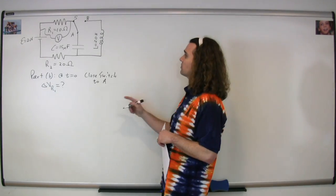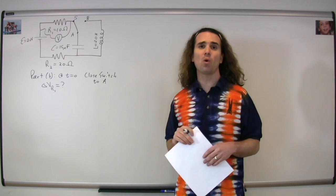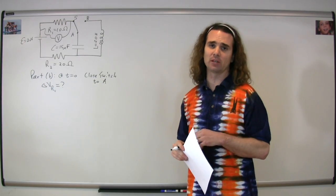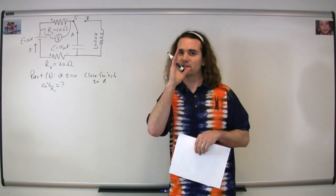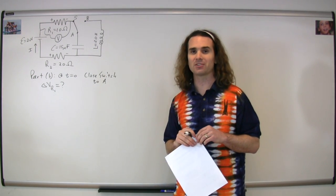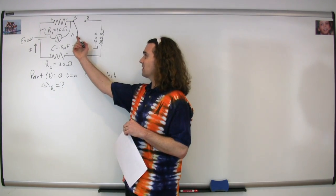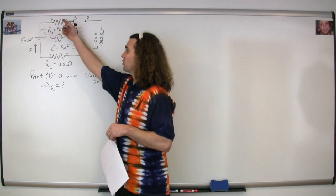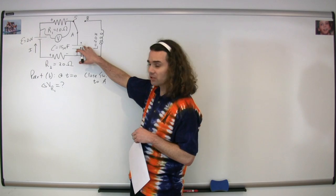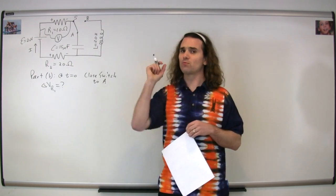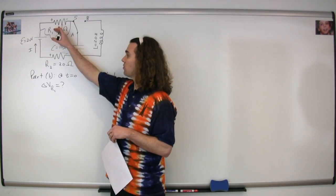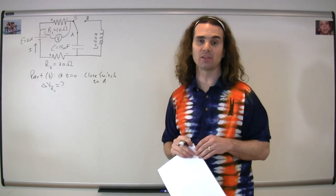Part B: at time t equals zero, we close the switch to position A. The question is, what is the potential difference across resistor 1 immediately after t equals zero? Initially, right when we close the switch, this capacitor has zero charge and therefore zero electric potential difference across the capacitor. Therefore, essentially, this capacitor acts like it's not even there and we have current going through this circuit. As time goes by, charge is going to build on the capacitor, which means the current is going to decrease. But right at that very beginning, we're going to have the maximum current, and the equivalent resistance is just resistor 1 and resistor 2 in series.